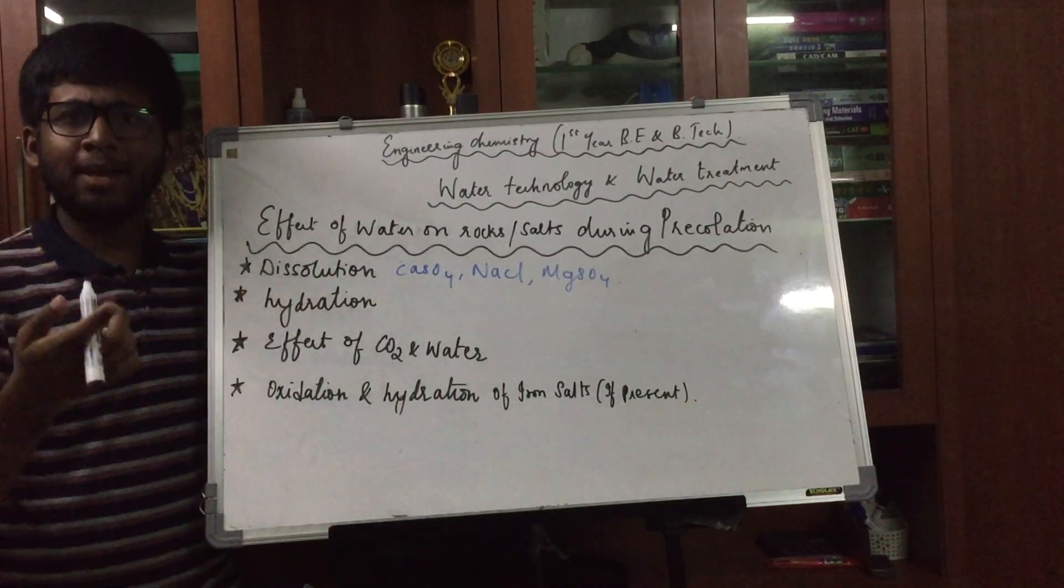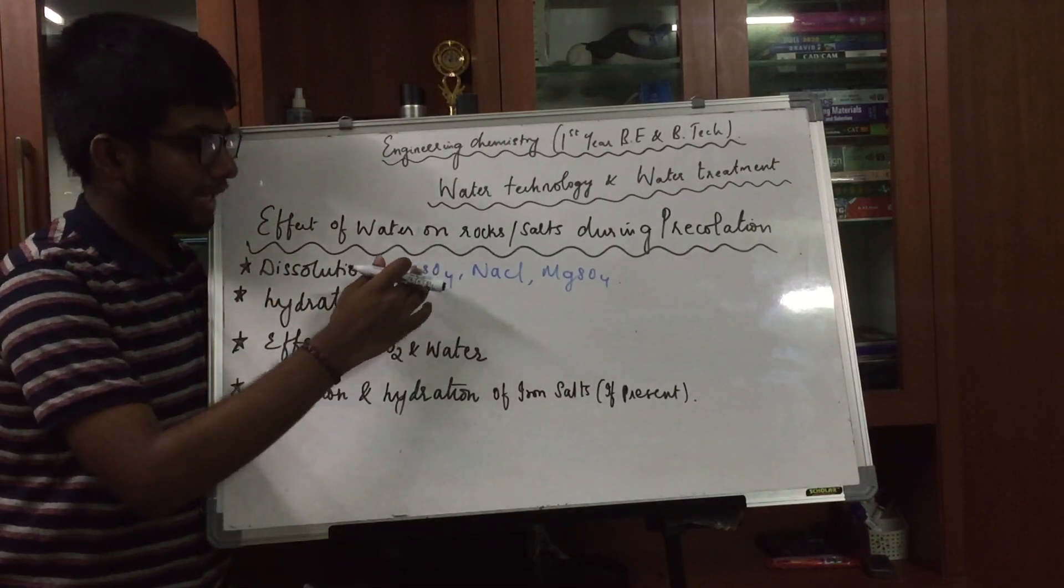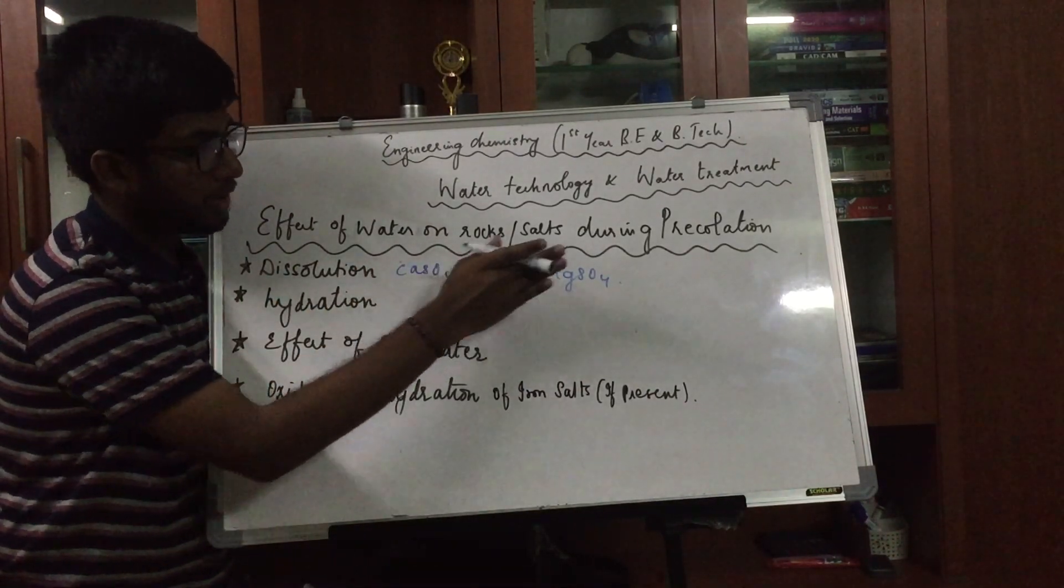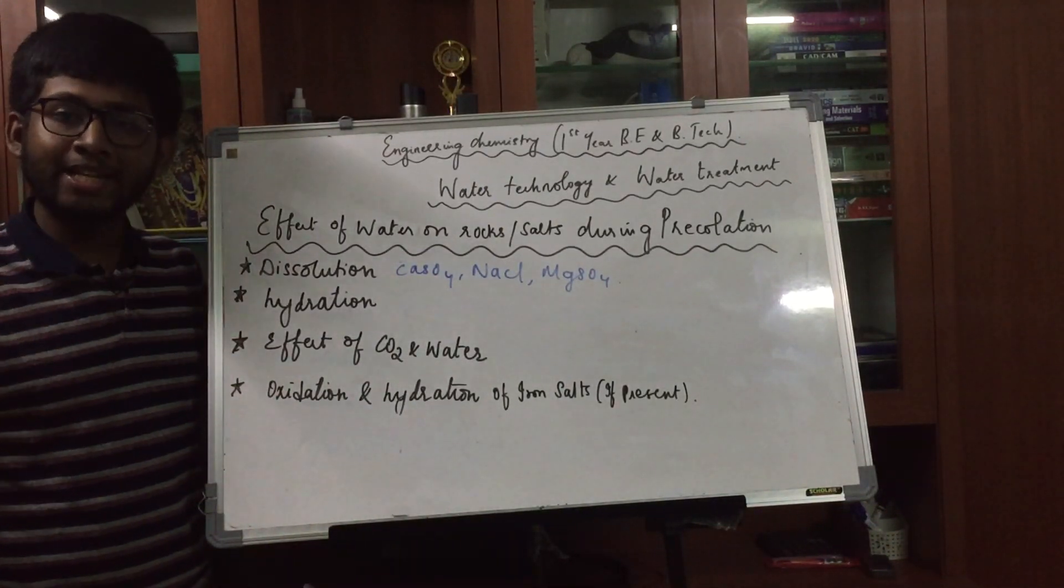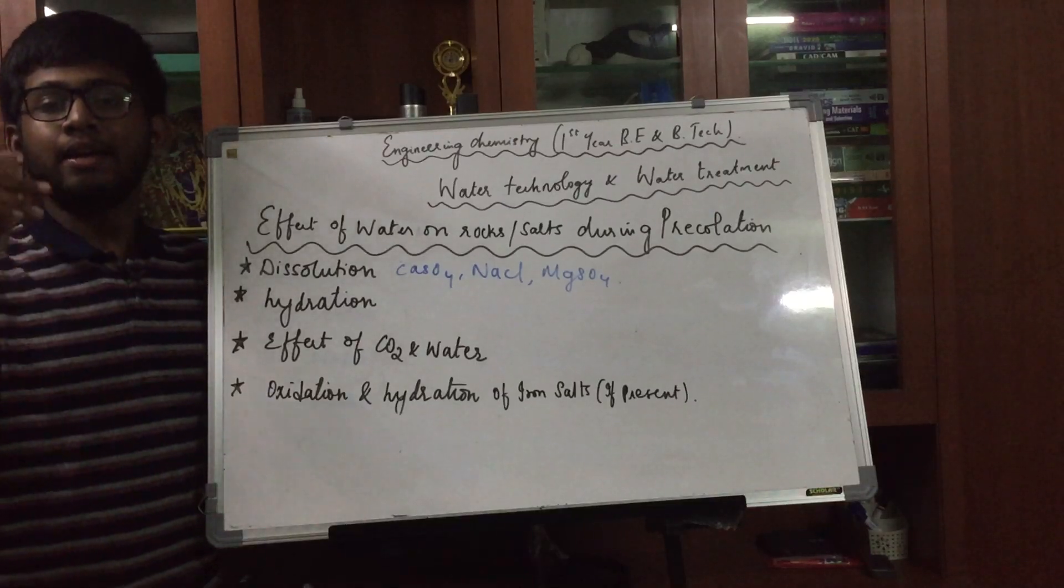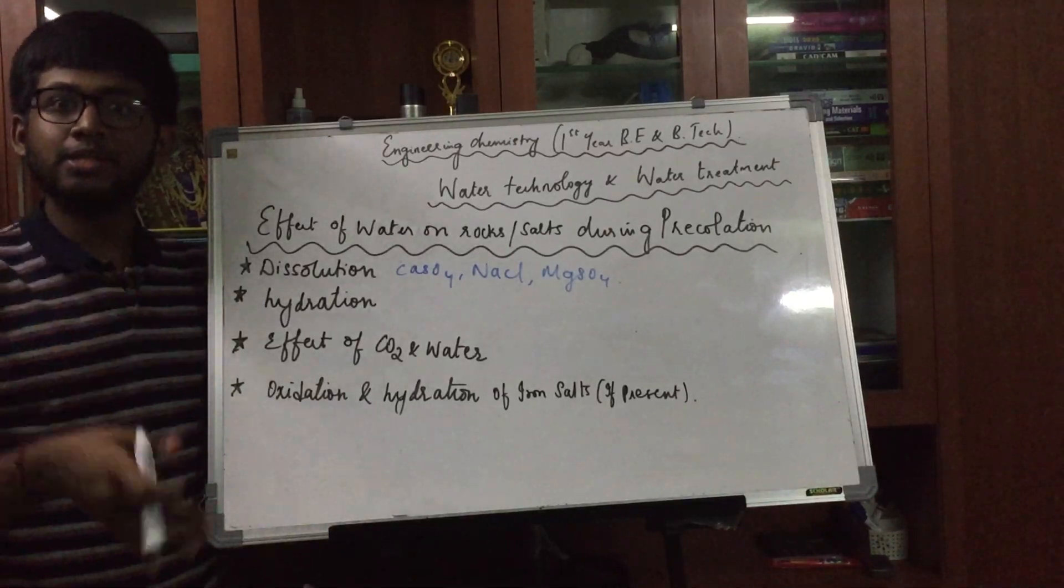The first one is dissolution. As the name suggests, in case there are salts like calcium sulphate, sodium chloride, magnesium sulphate and various other salts present around the area where percolation of water takes place, these salts will have the capability to dissolve in water.